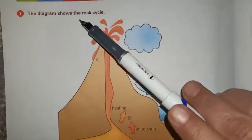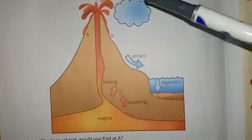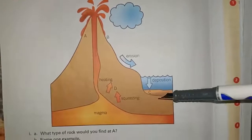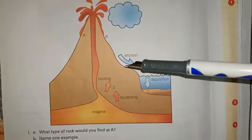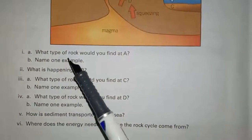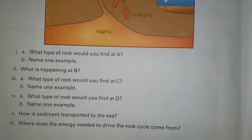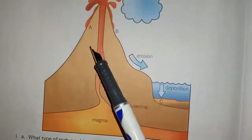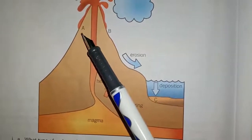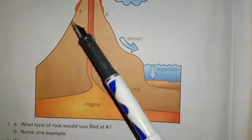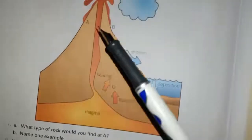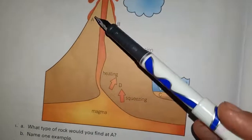Question number 7: the diagram shows the rock cycle with different points A, B, C and D, and we have to answer the questions given below. Part 1A: what type of rock would you find at A? Igneous rocks form the starting point of the rock cycle, so we will find igneous rocks at point A. Part 1B: name one example. Examples of igneous rocks are pumice, granite, basalt.